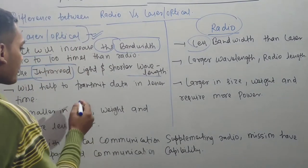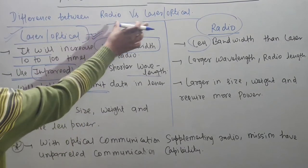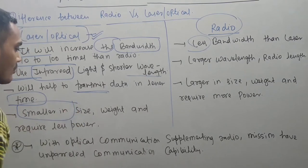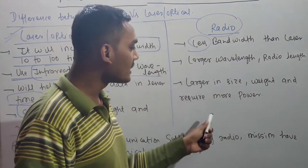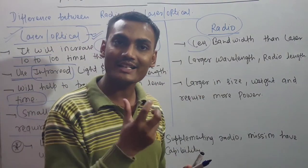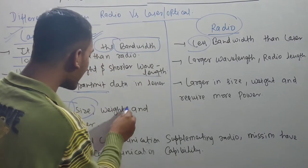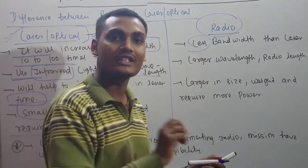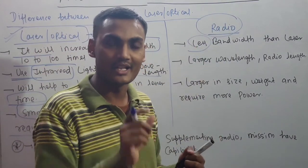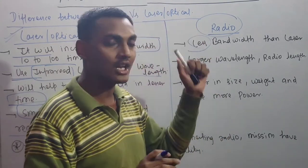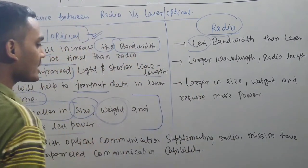Laser communication helps transmit data in lesser time. Additionally, laser or optical communication systems are smaller in size, lighter in weight, and require less power compared to radio. Less size means more instruments can fit in a satellite; less weight reduces stress on the satellite; and less power consumption means less stress on the satellite's batteries.